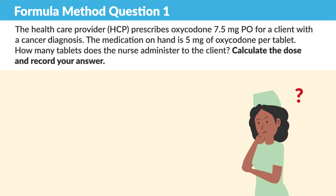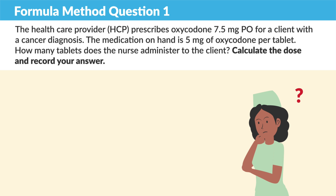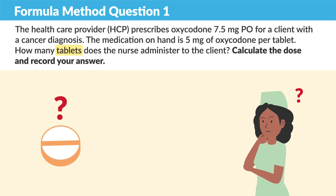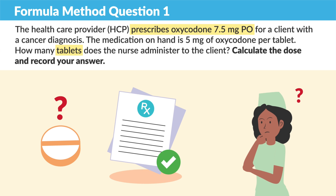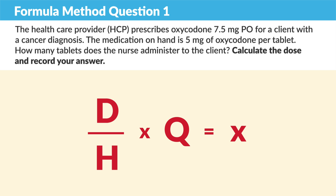All right, so let's break this down. First, identify what you're solving for based on the question provided. In this question, you're calculating how many tablets or tabs the client should receive to achieve the prescribed medication dose. Next is to set up the equation — desired over have, or basically the formula method.